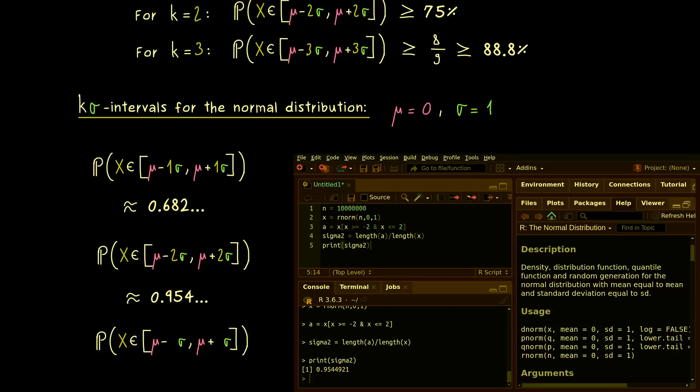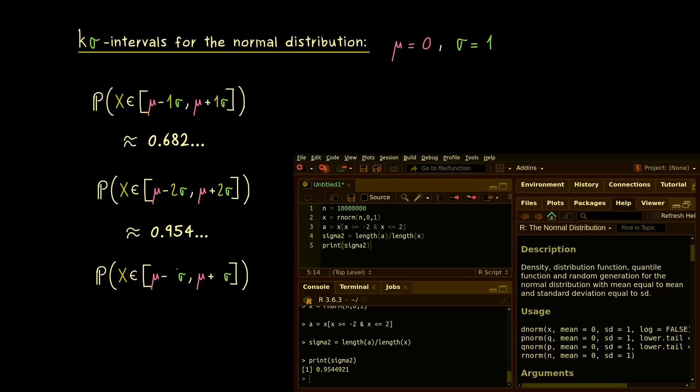In fact, the 3 sigma interval for the normal distribution is already really high. Again, in order to calculate it here in R, we don't have to change much. Here we have a minus 3 and there a plus 3. And then as before, let's simply run it again and again. And then we see, we are at 99%. Indeed, it's even better, because 99.7% are covered here. And there I can already tell you, you should definitely remember these three numbers here for the first k sigma intervals of the normal distribution.